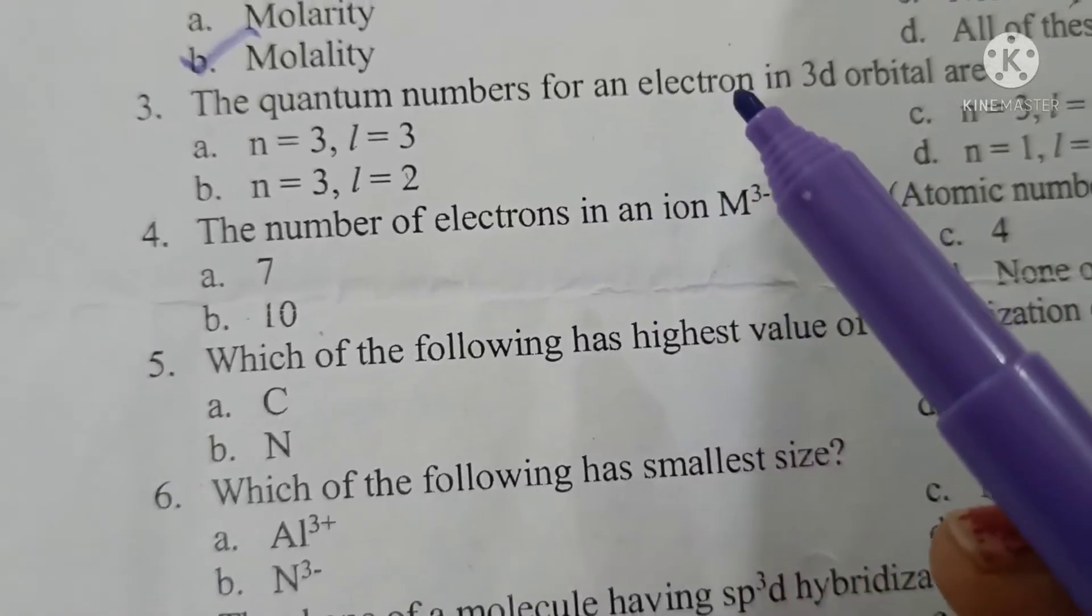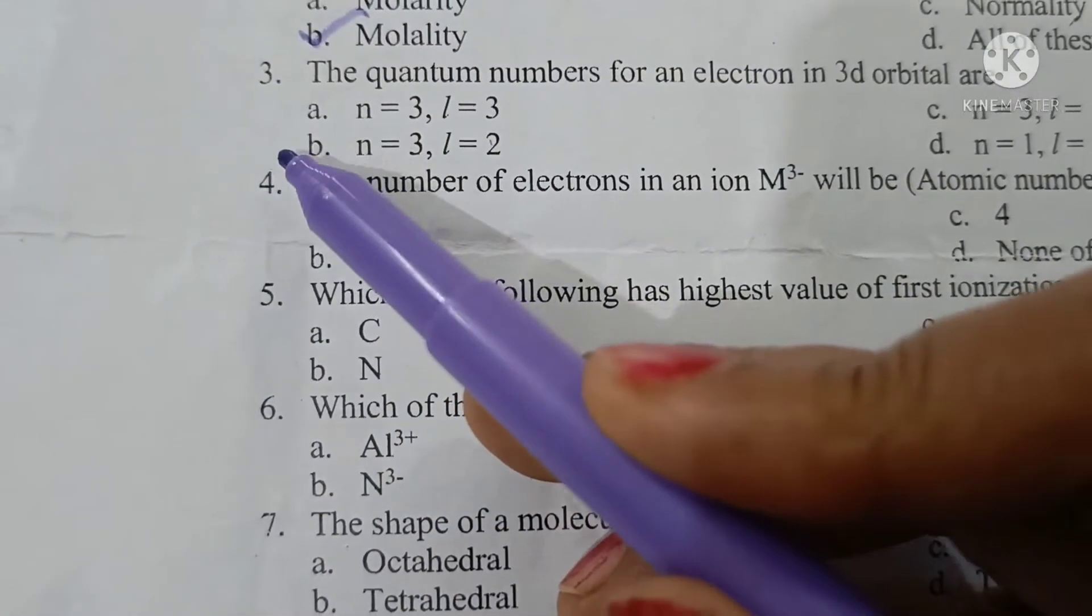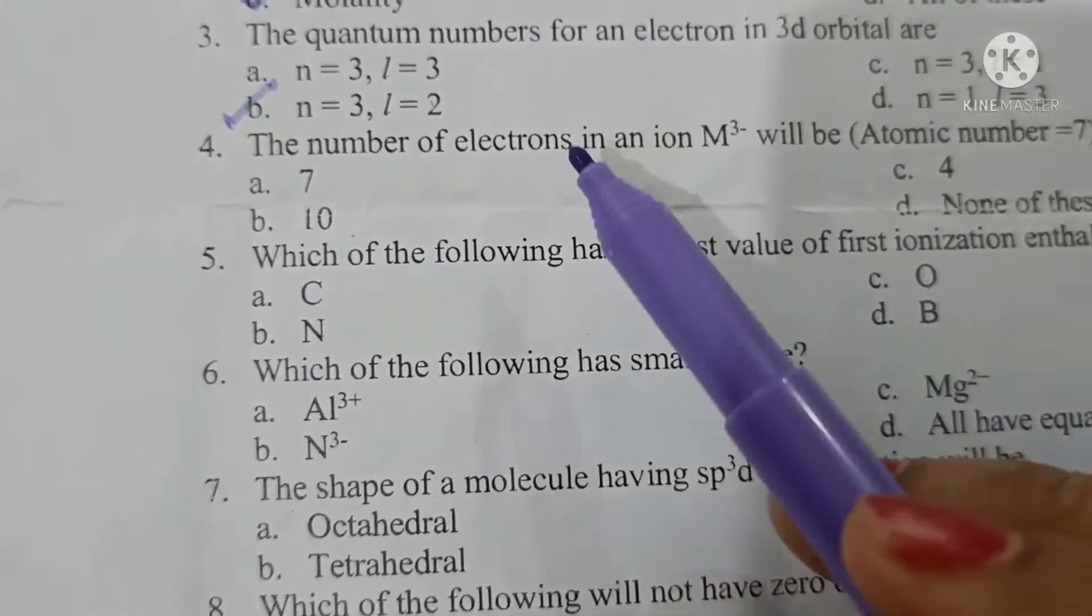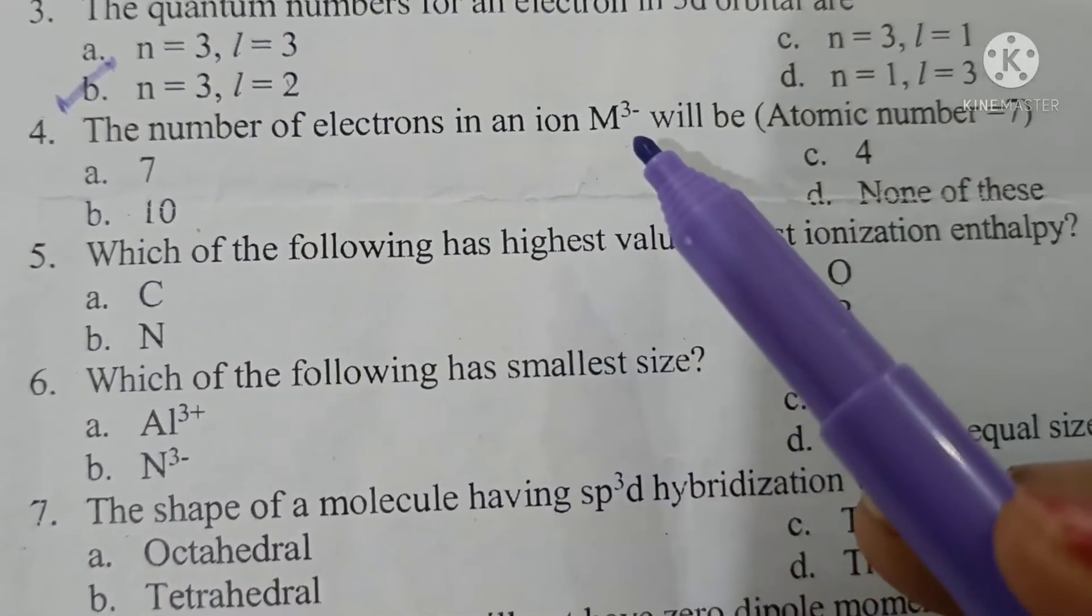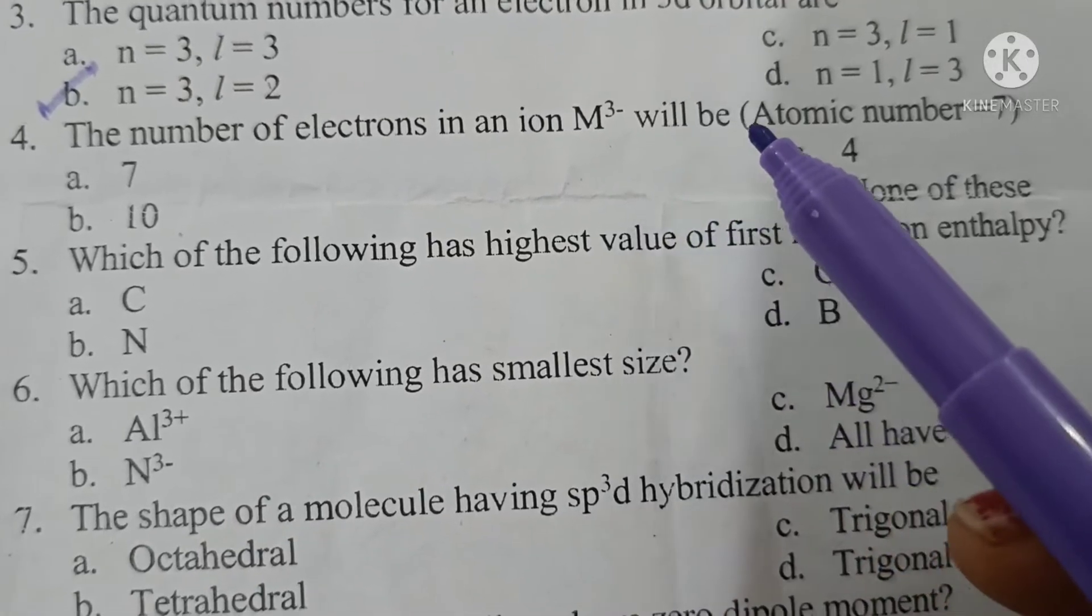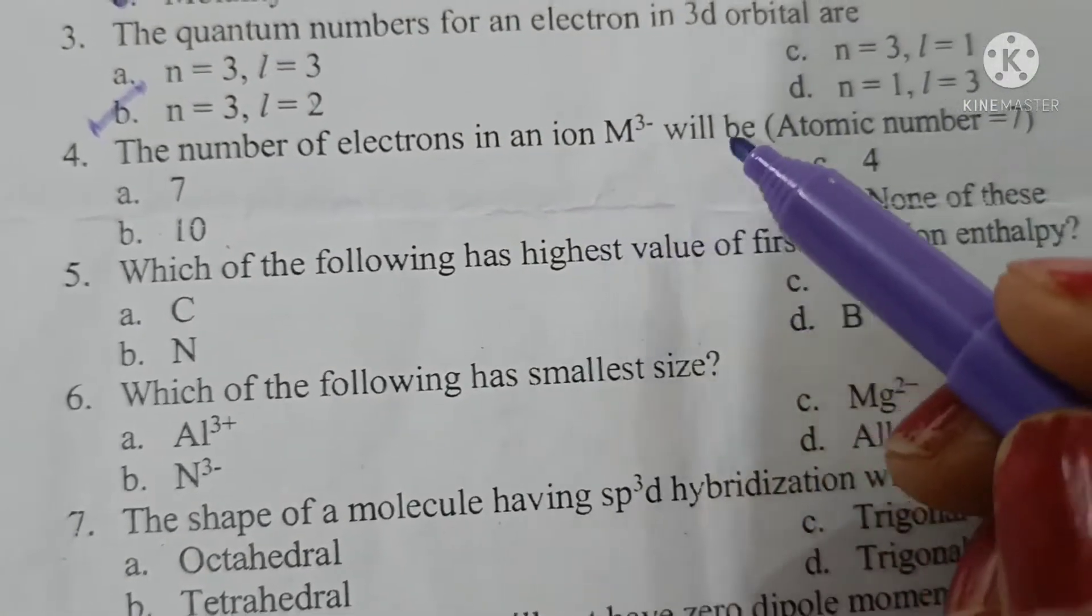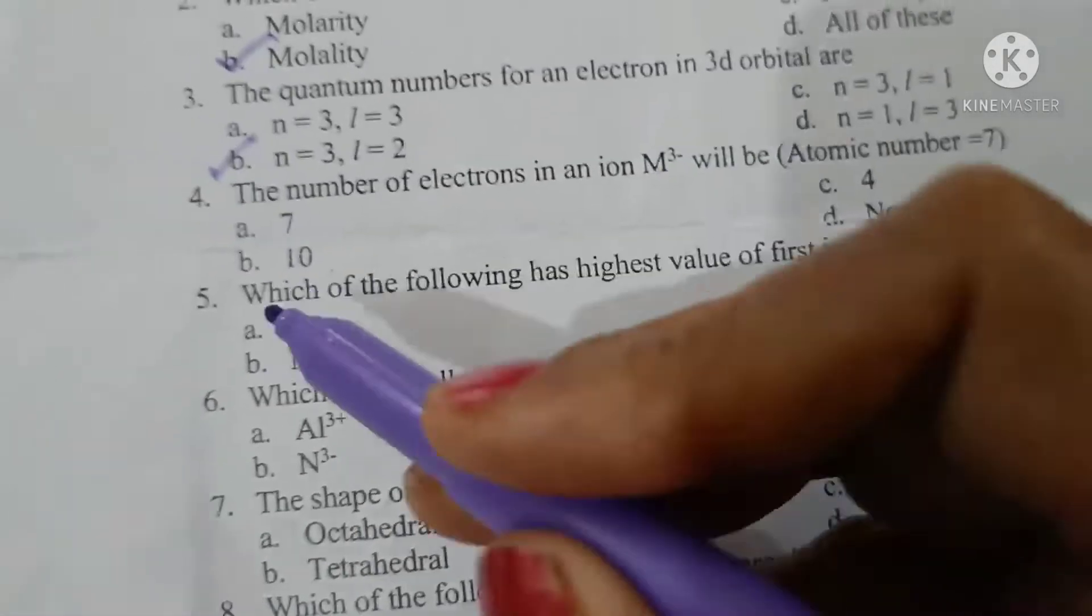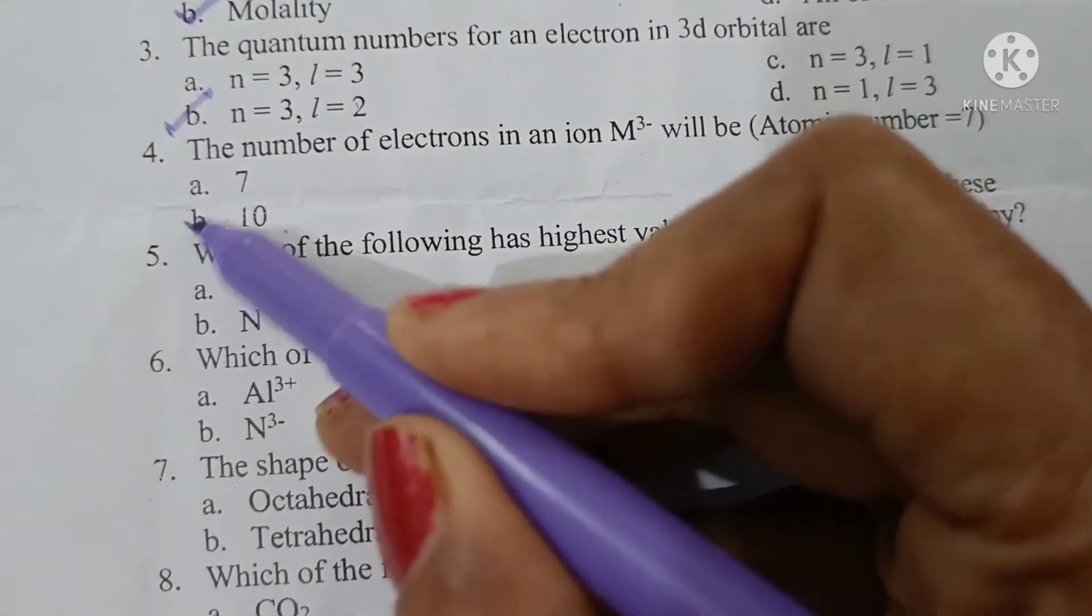The quantum numbers for an electron in 3d orbitals is n equals 3 and l equals 2. Option B. The number of electrons in an ion M3 negative with atomic number 7 - with 3 negative, 3 extra electrons are added, so the number of electrons are 10.